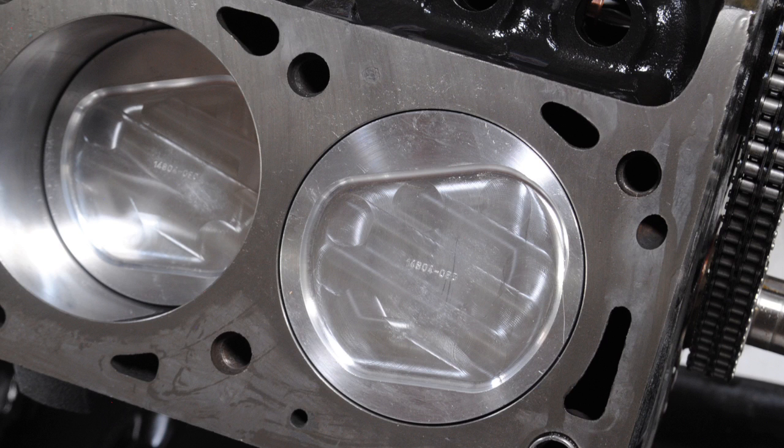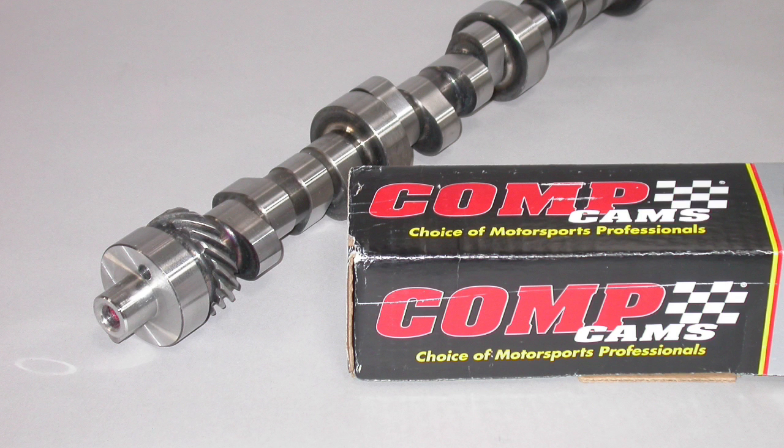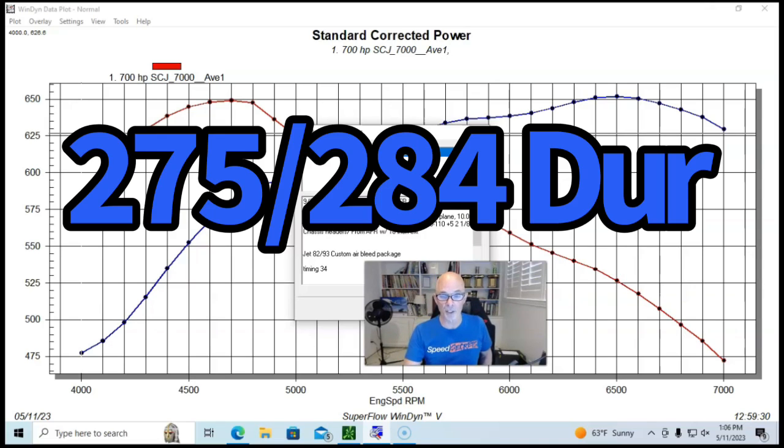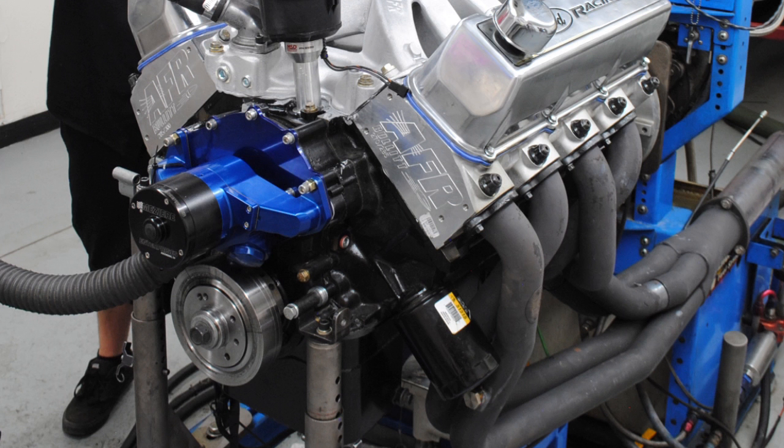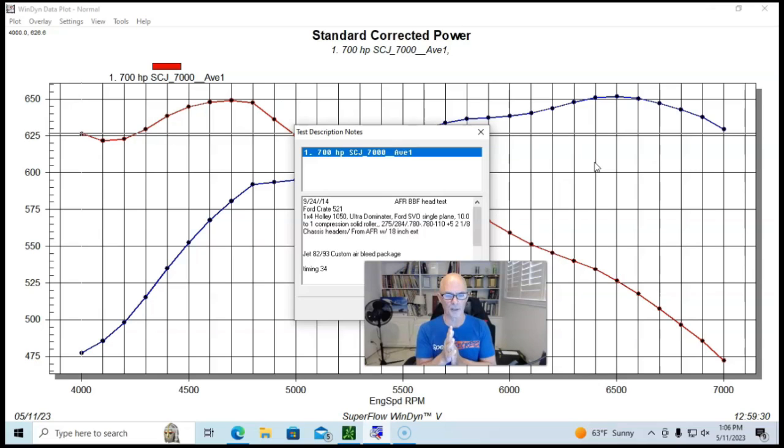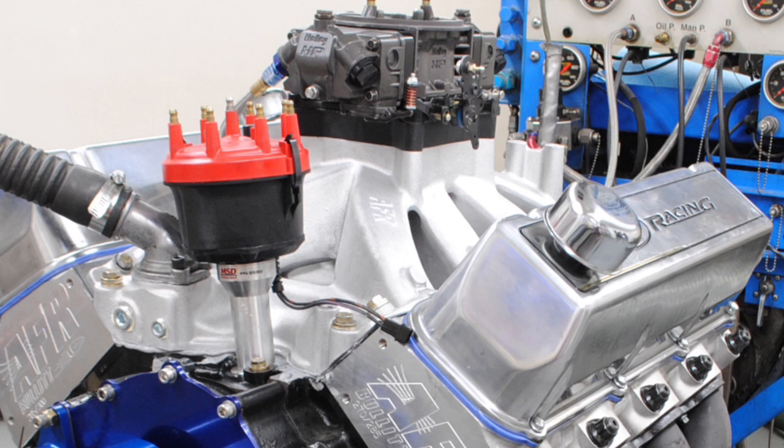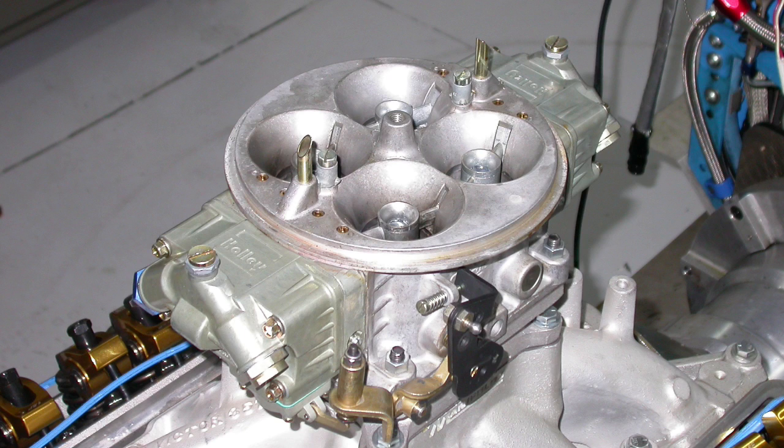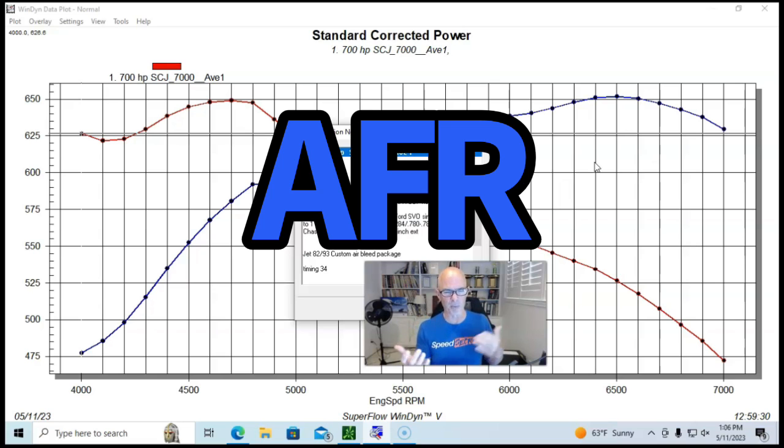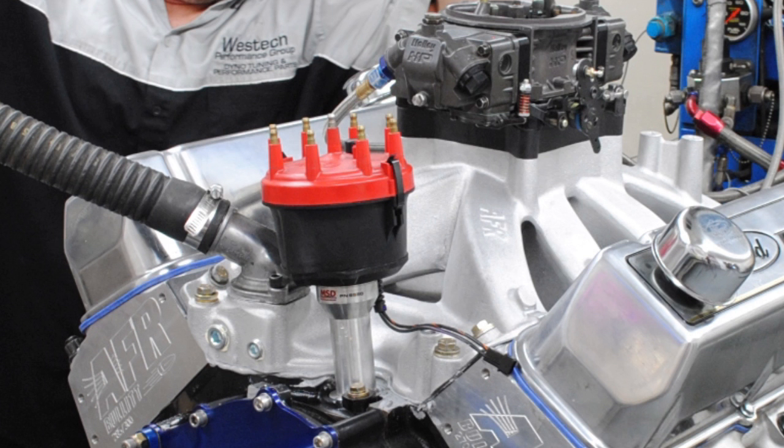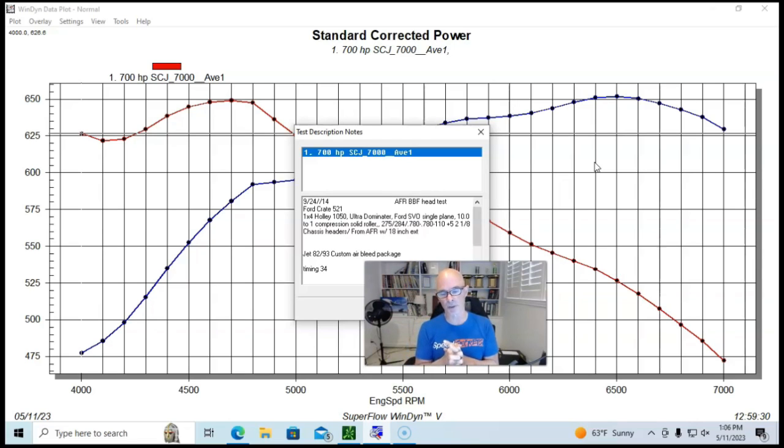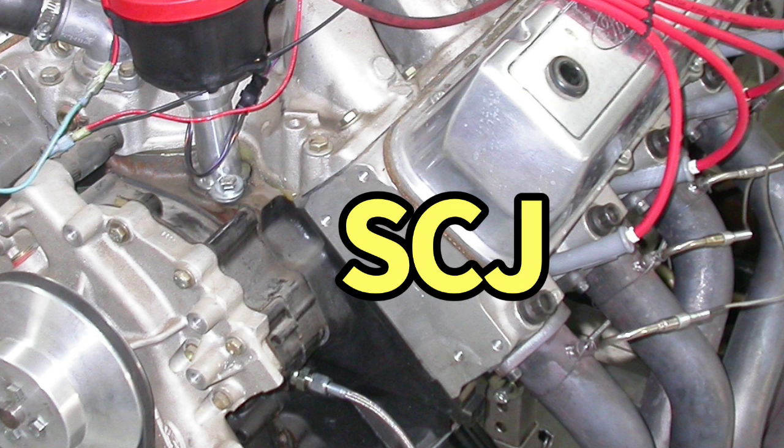This was a Ford crate motor. It was a 521 cubic inch big block, 460 base stroker motor. It was 10 to 1. They put a good size camshaft in it, 780 lift, 275, 284 degree duration, and 110 plus 5. They had two and an eighth inch chassis headers on it. They used a single four barrel, a single plane intake manifold with a 1050 Holley Dominator on it.